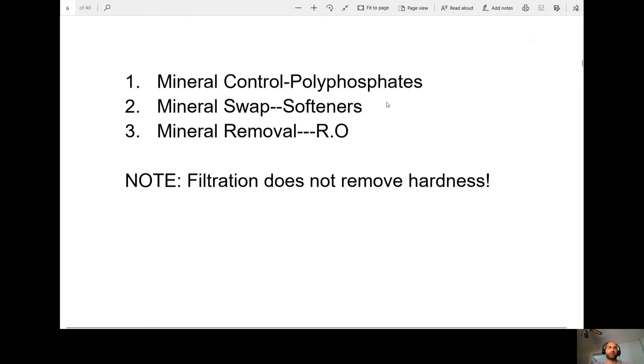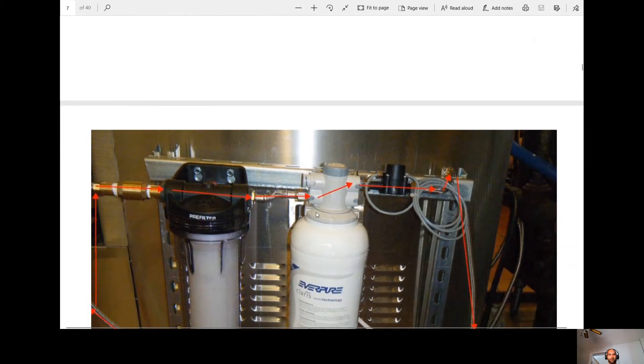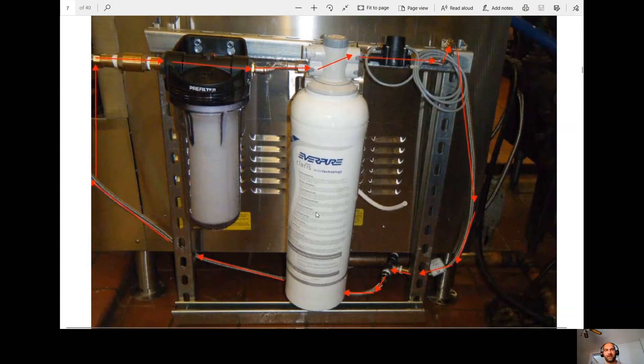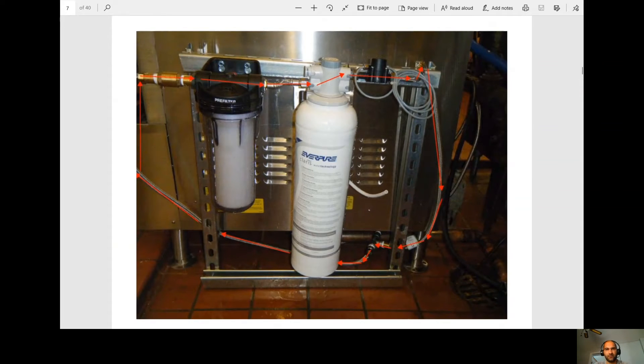Alright, so mineral control through polyphosphates, mineral swap through softeners, and mineral removers through an RO system. So there are all different types of filters as we know. Filtration does not remove hardness. Here's a basic setup. So we have our water coming in through the filter, we have a pre-filter, then it goes through the secondary filter and then it goes into the unit.